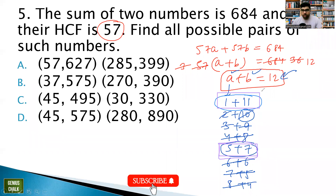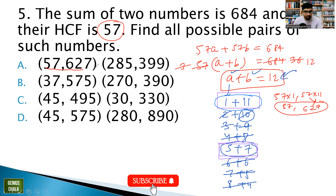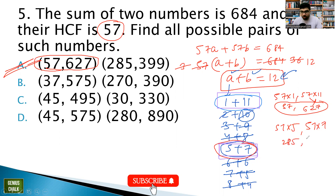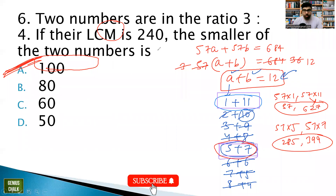For pair (1,11): numbers are 57×1=57 and 57×11=627. For pair (5,7): numbers are 57×5=285 and 57×7=399. So the two possible pairs are (57, 627) and (285, 399), which correspond to the answer options.